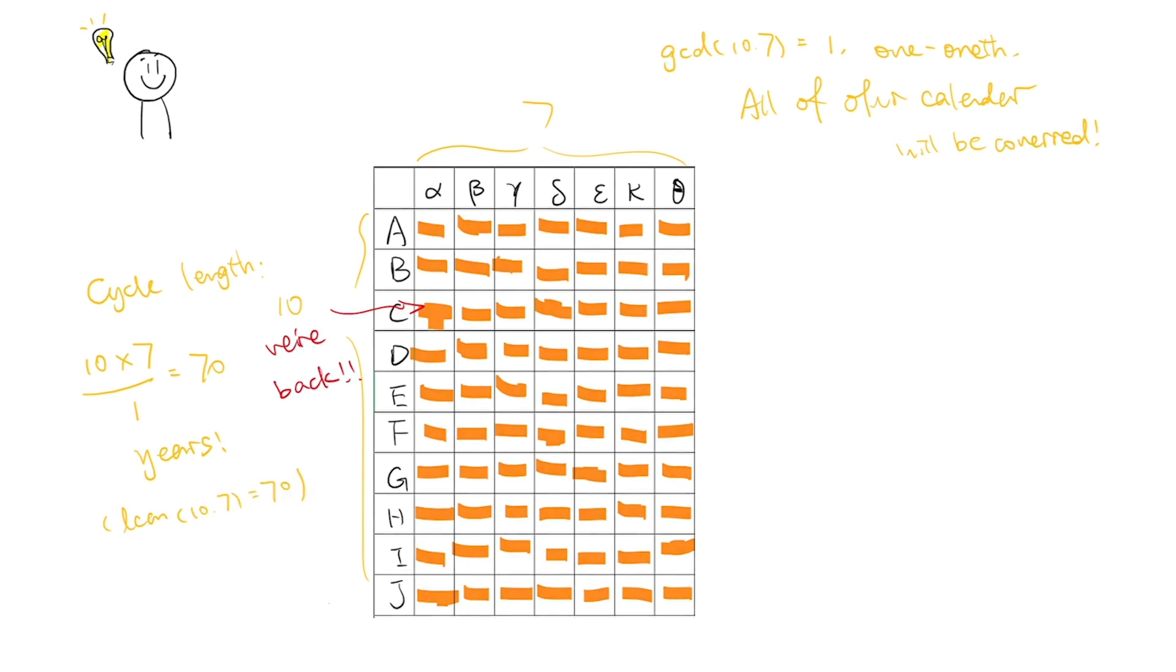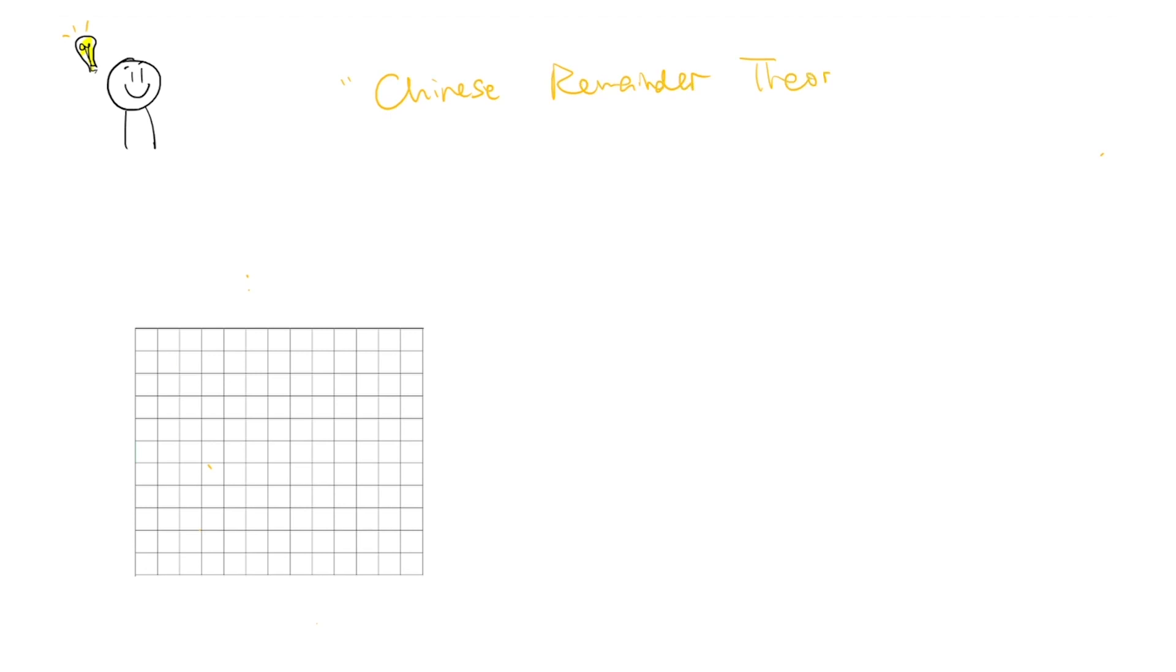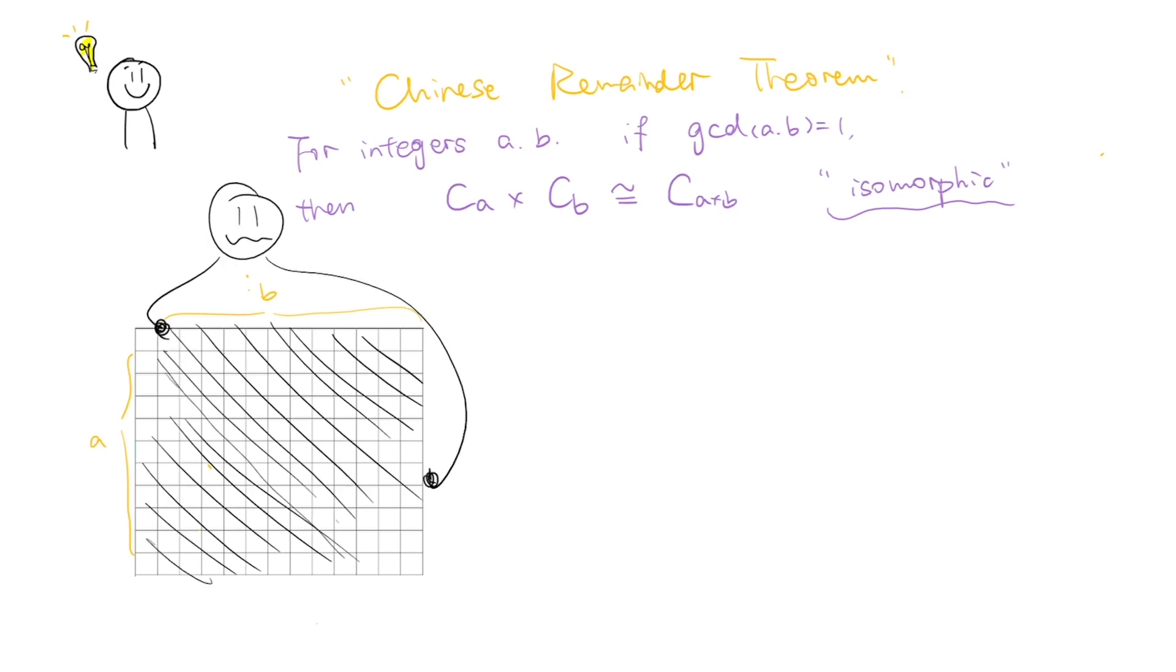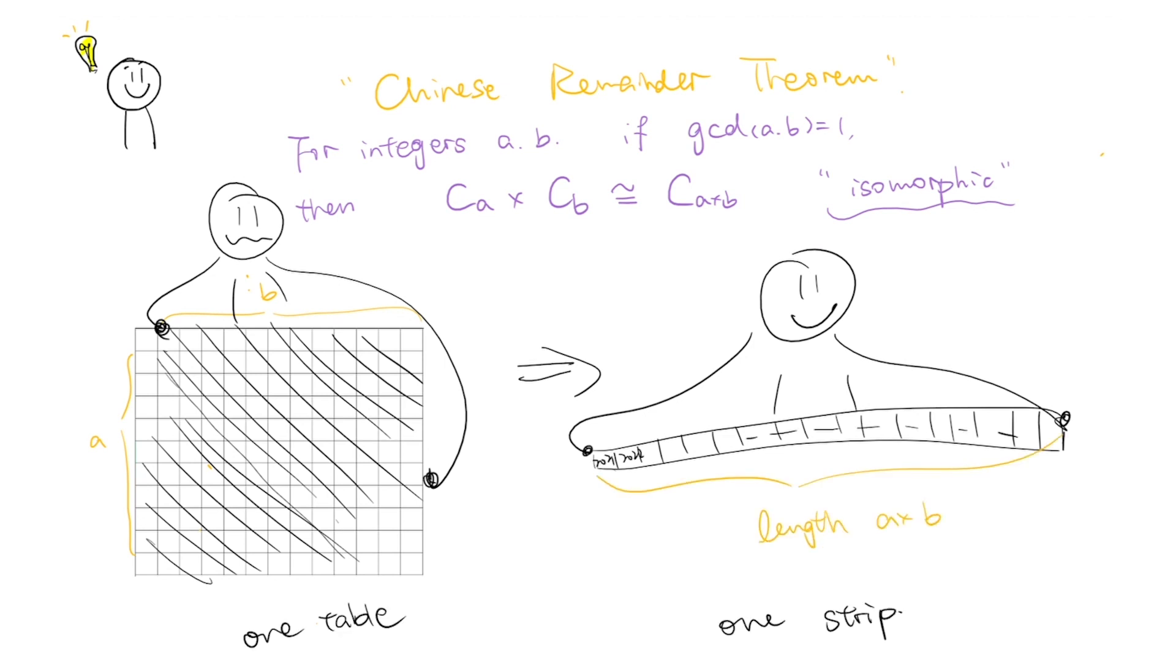In fact, there is a related theorem called Chinese remainder theorem that addresses such phenomena. Chinese remainder theorem states that for integers a and b, if greatest common divisor of a and b is 1, then the product group of a and b is isomorphic to a times b. In terms of our calendar, it's basically saying that the a by b chronology table we created can be unwrapped to form one strip of continued years with length a times b, only if the greatest common divisor of a and b are 1.